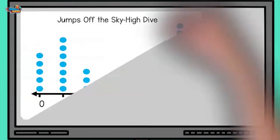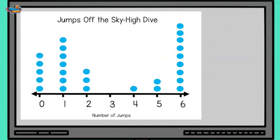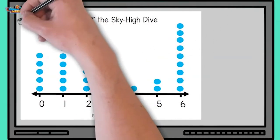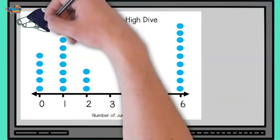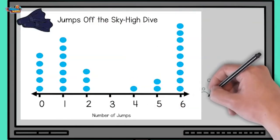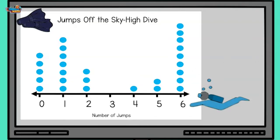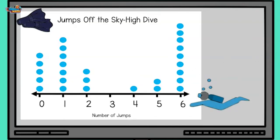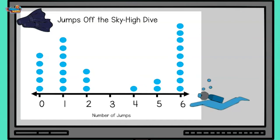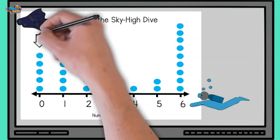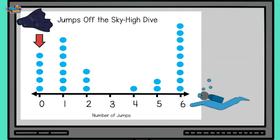This isn't weird. It is called a dot plot. The title tells us we will be looking at the amount of jumps off the sky high dive. The horizontal axis tells us the number of jumps each person surveyed took. The dots represent the amount of people who took the amount of jumps. So for example, five people have never jumped off the sky high dive.